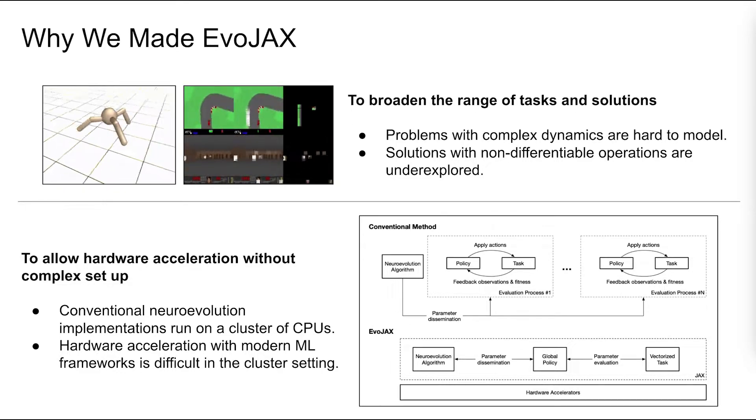For example, instead of maintaining policies and tasks across all the CPUs, we only maintain a global policy and a global task that runs smoothly on GPUs and TPUs. As a result, we observe high data throughput during training and 10 to 20 times speed up on the popular machine learning tasks.